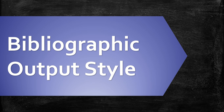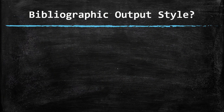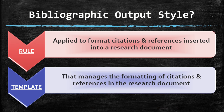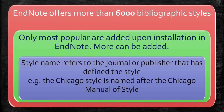A bibliographic output style is a rule applied to format citations and references inserted into a research document. It is a template that manages the formatting of citations and references. EndNote offers more than 6,000 bibliographic output styles, though only the most popular are added upon installation.